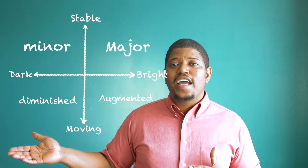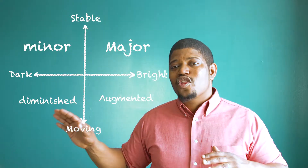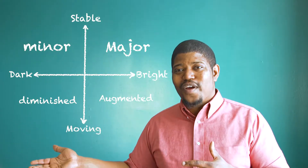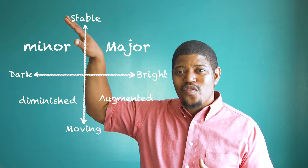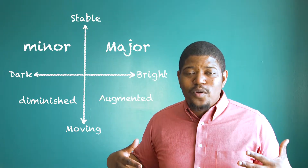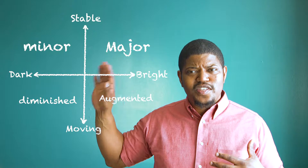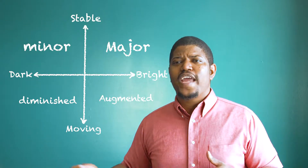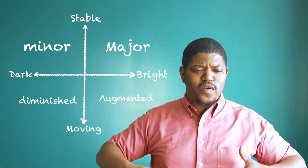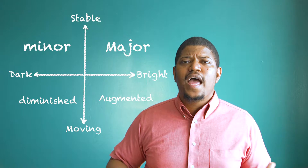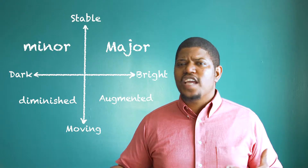A diminished triad is on the transient side of our graph here. We had major and minor, which are more stable — dark and bright, but still stable chords. On the bottom we have our more transient, unstable chords. Diminished is the darker of the two on the bottom, and we use that for an ominous sound.